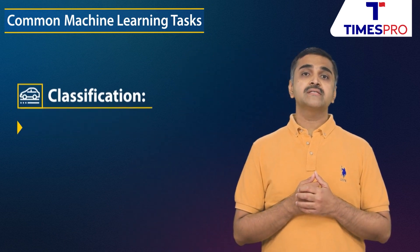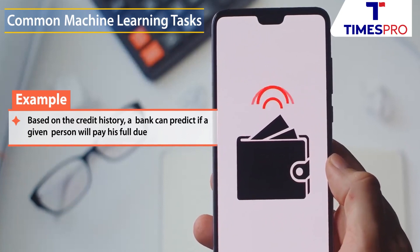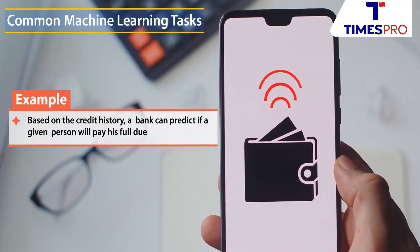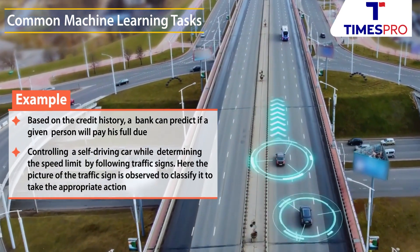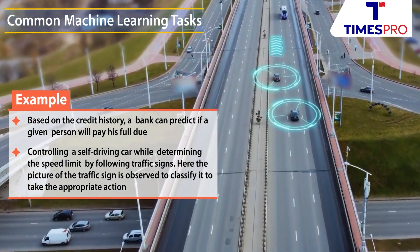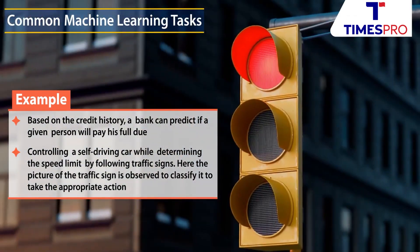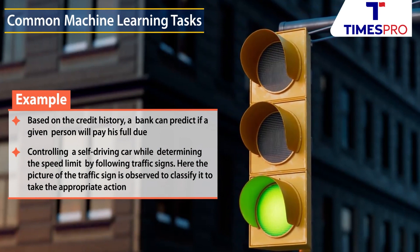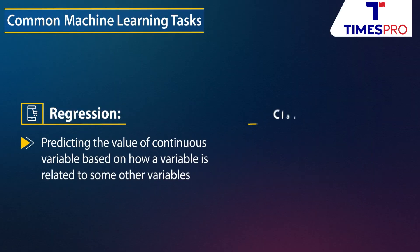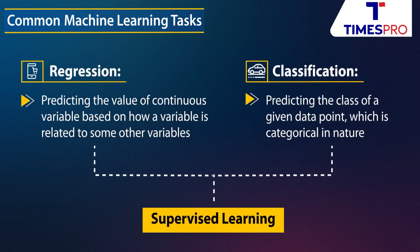Classification is predicting the class of a given data point, which is categorical in nature. An example involves a bank predicting whether a customer will pay their dues or not based on credit history. Another example is controlling a self-driving car while determining speed limits by following traffic signs — the picture of the traffic sign is observed to classify it and take the appropriate decision. Both regression and classification involve making predictions, which fall under supervised learning.